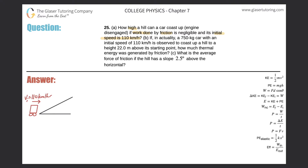To convert, we have 110 kilometers per hour times 1000 meters per kilometer, divided by 3600 seconds per hour. The kilometer units cancel and the hour units cancel, leaving us with meters per second.